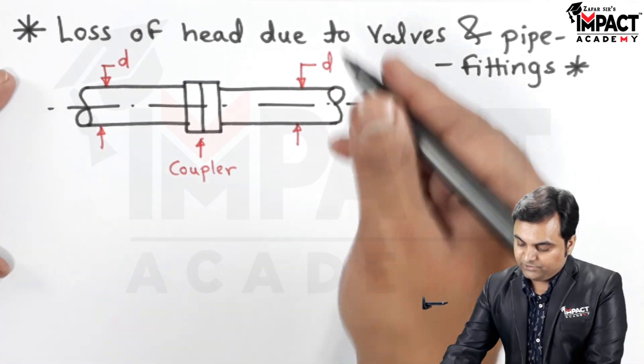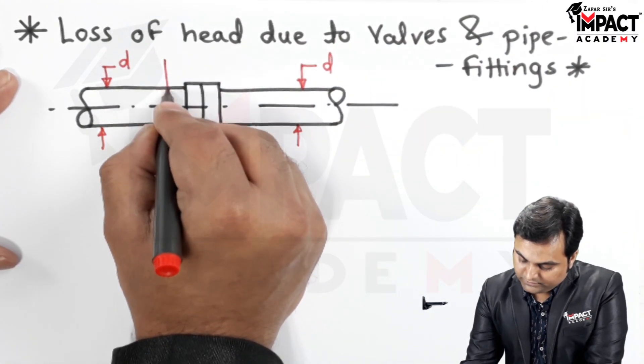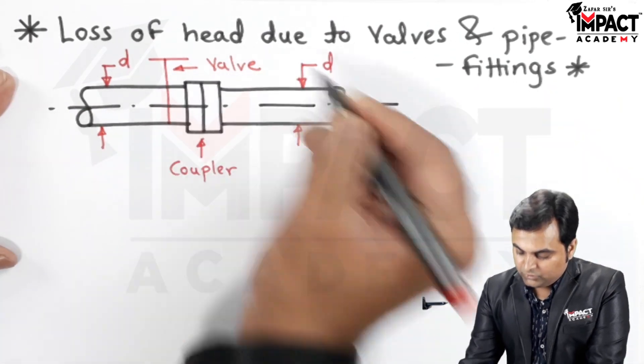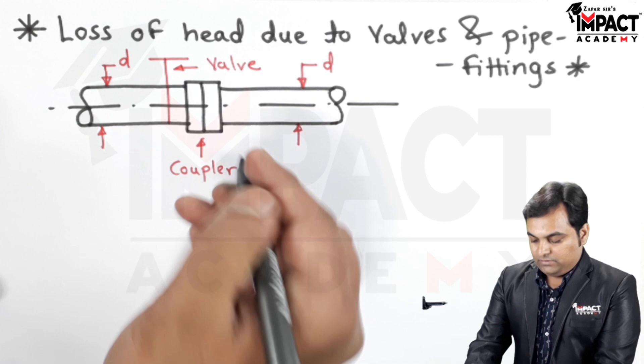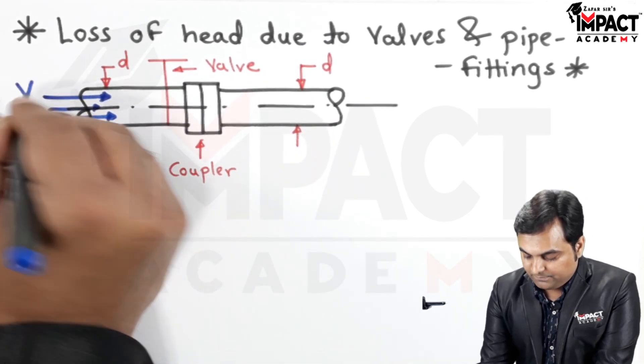At the same time, here I am assuming that there is a valve, and a fluid is flowing with a velocity v inside this pipeline.